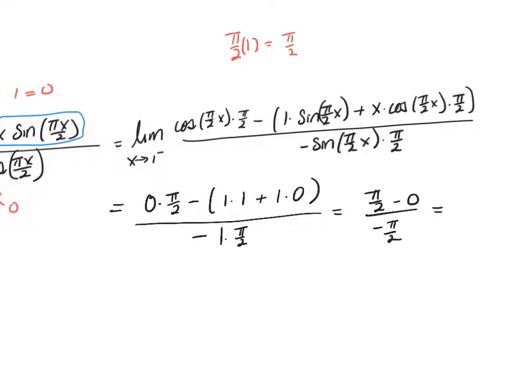What is my final answer? It'll be 0 minus 1 over negative π/2. The double negatives cancel, so I have 1 divided by π/2. In other words, it's going to be 2 over π, and that's my final answer.